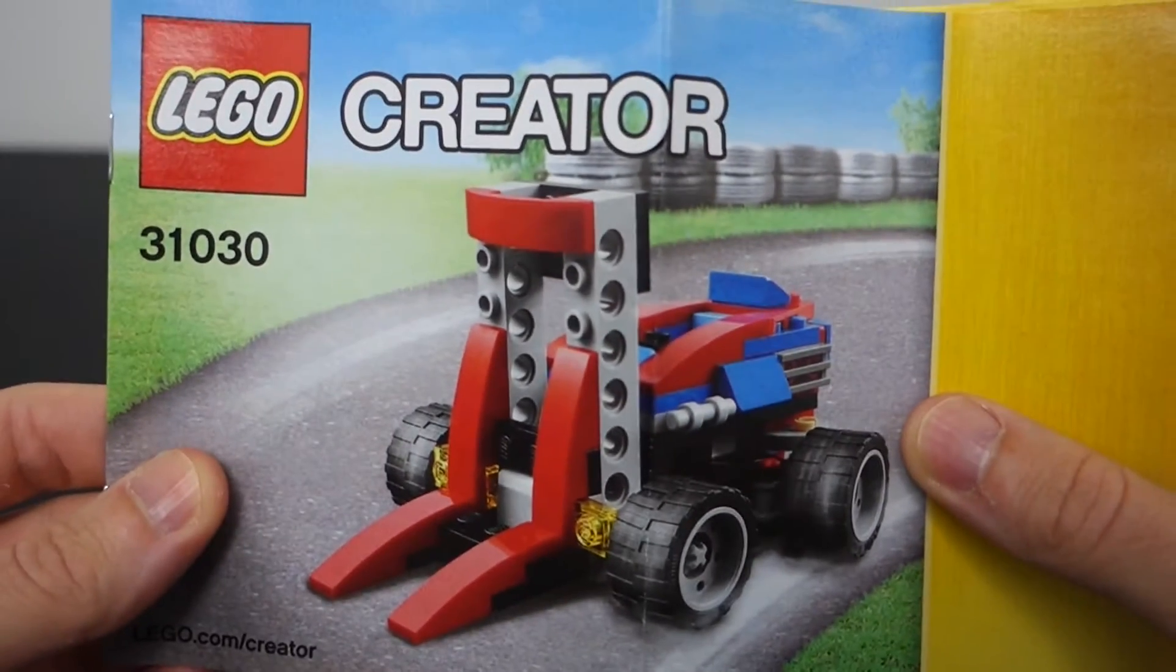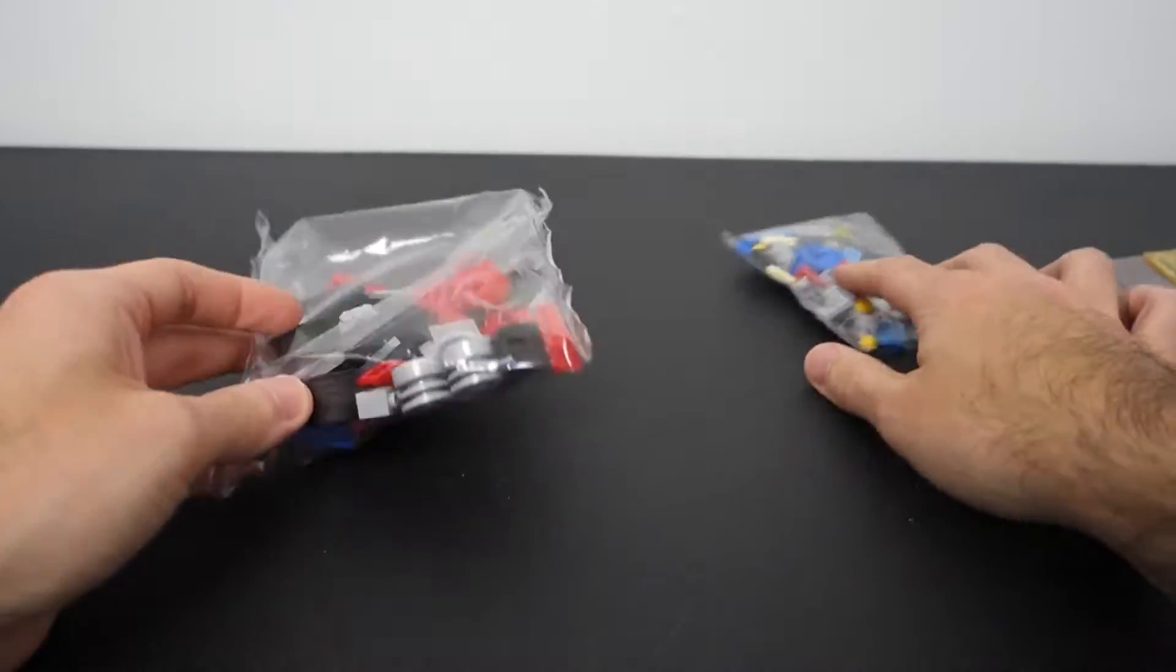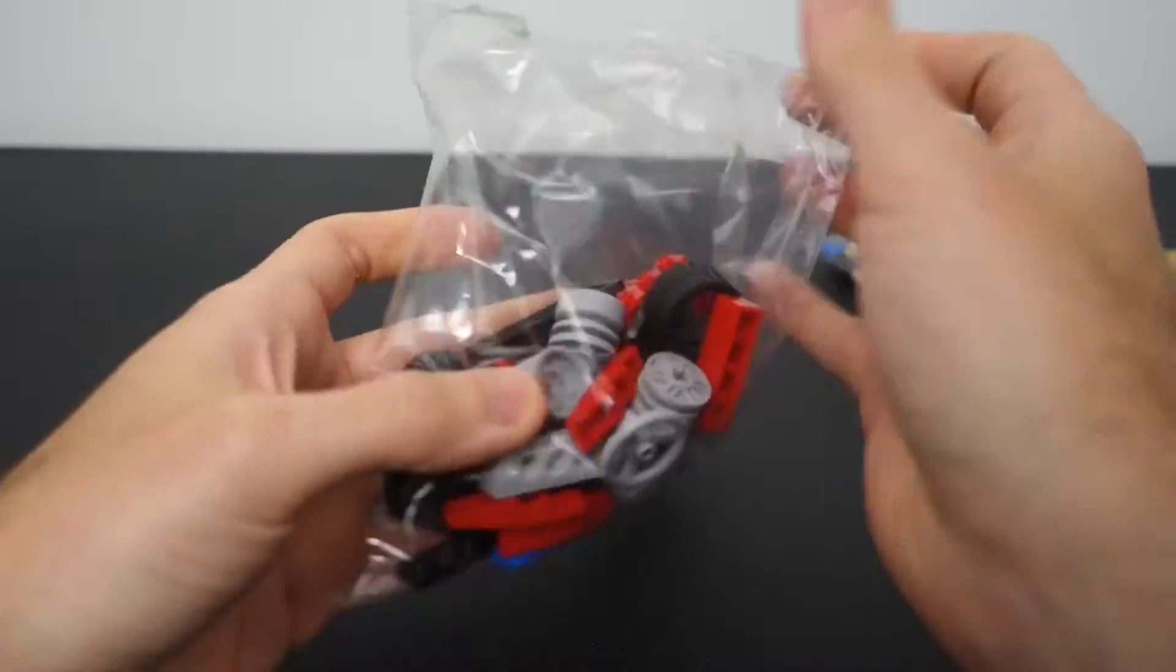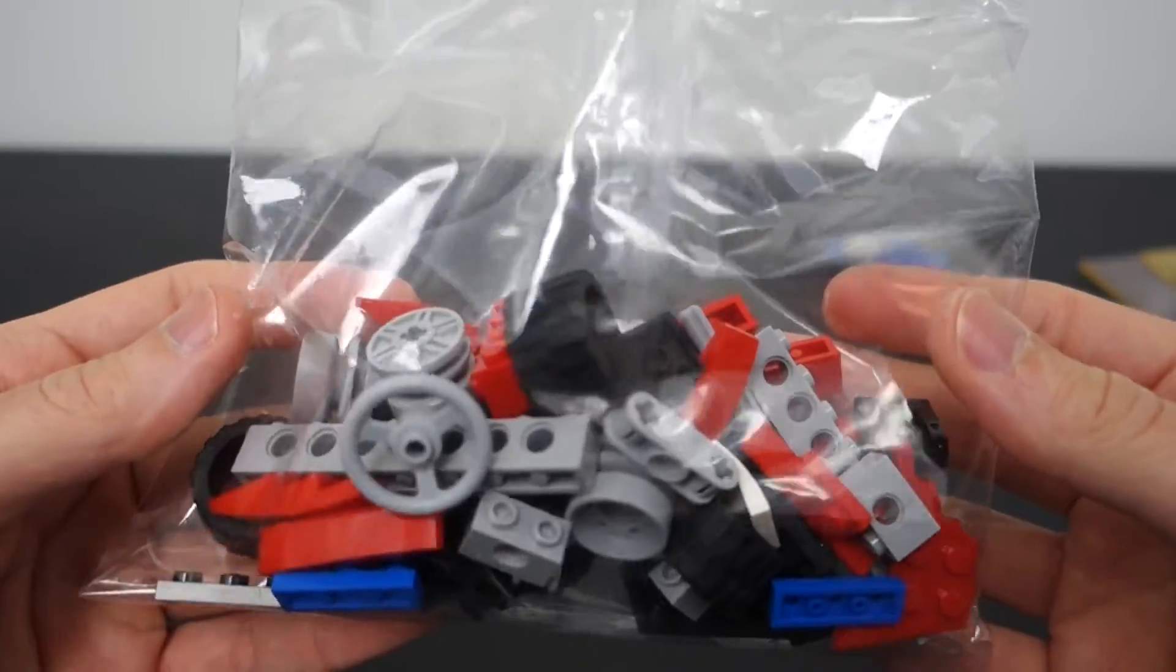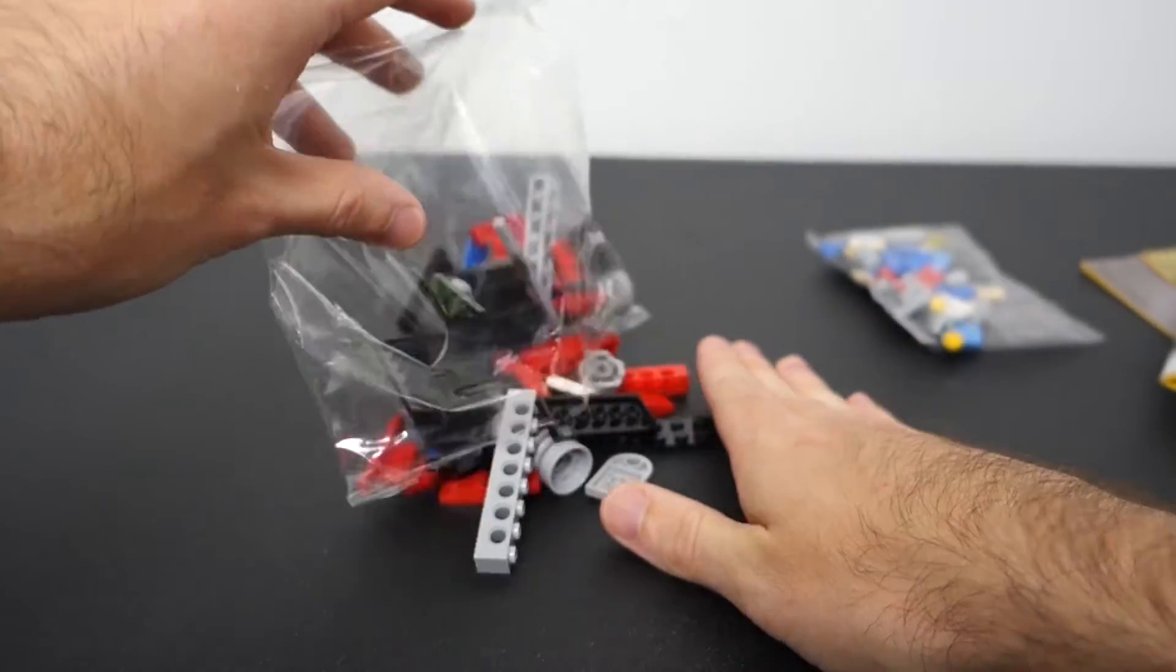And there is the forklift. I'm guessing that's what that is. That's what it looks like to me. Now we will open up the bag. This bag one. This is all the larger pieces. There's a steering wheel. There's the wheels in there. Open that up.